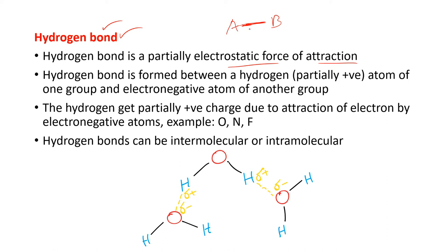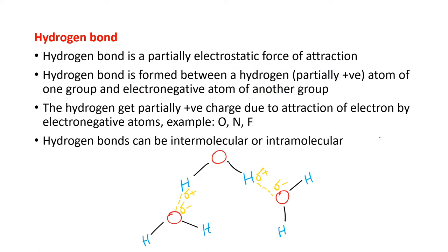There are different types of bonds, and here we are going to discuss about the hydrogen bond. The hydrogen bond is a partially electrostatic force of attraction. The hydrogen bond is formed between the hydrogen — partially positive atoms — of one group and the electronegative atoms of another group. An example given here is the water molecule.